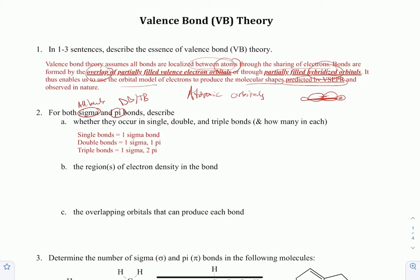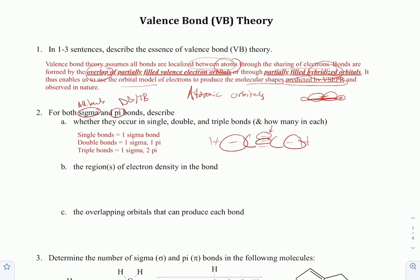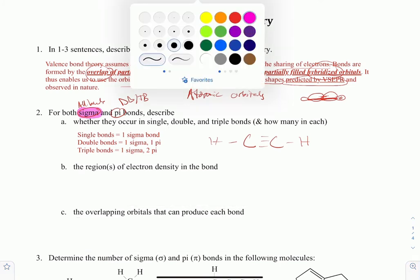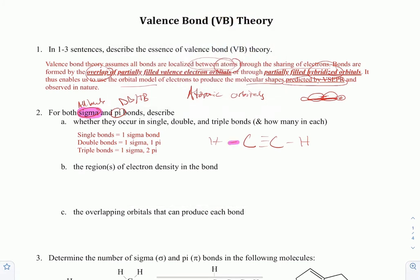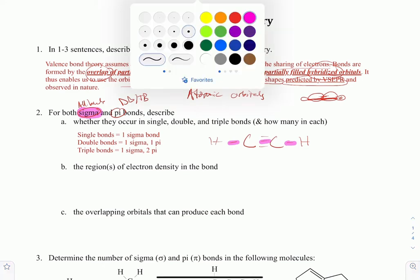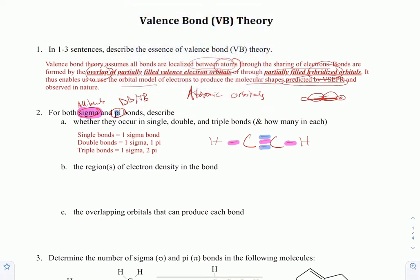For example, in acetylene — this bond on the end has one sigma bond, this one also has one sigma bond, but the triple bond in the middle has one sigma and two pi. I'll put the sigma in purple and the pi in blue so you can see them clearly.